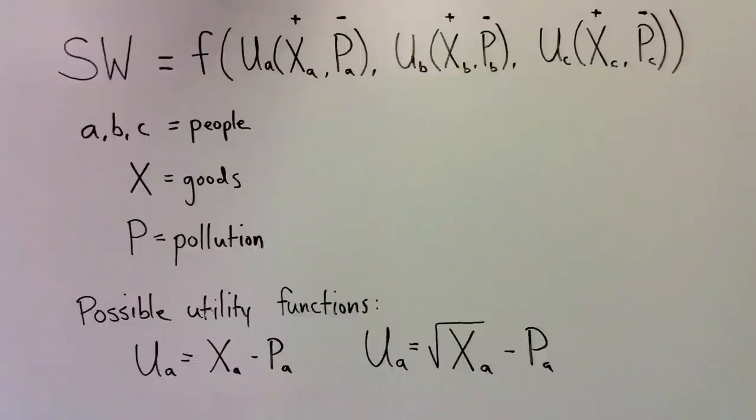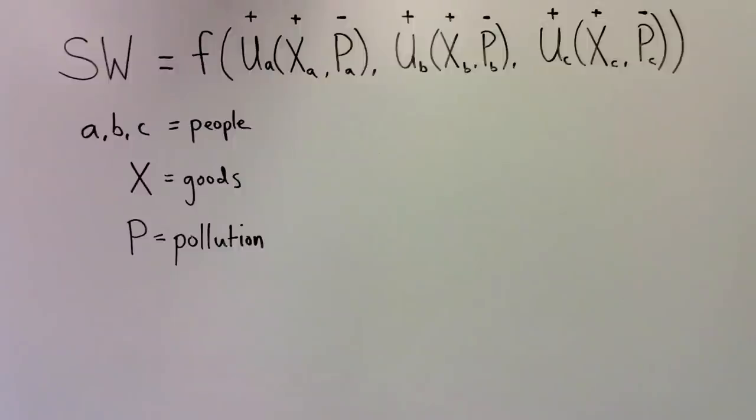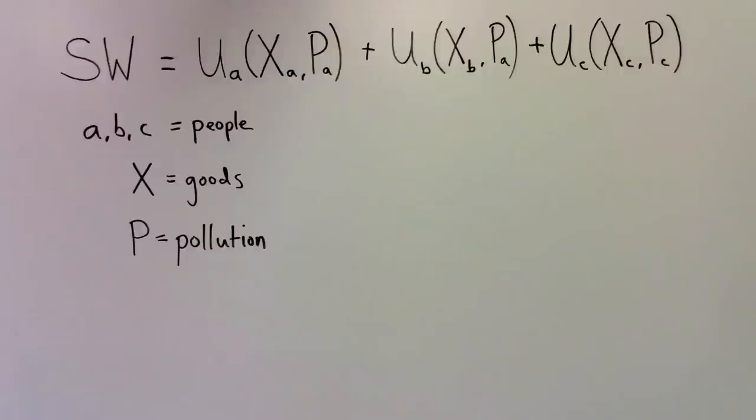Economists also make assumptions about social welfare functions, which aggregate the utility of all individuals. Social welfare increases in each individual's utility, but we illustrate by placing a plus sign over those arguments in the social welfare function. Social welfare function is often given by the following equation: Social welfare equals the utility of A plus the utility of B plus the utility of C, in which social welfare is simply the sum of individual utilities.